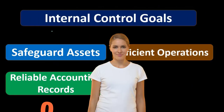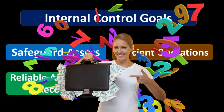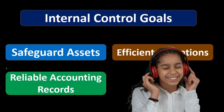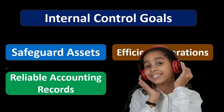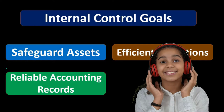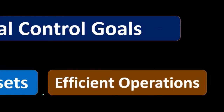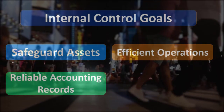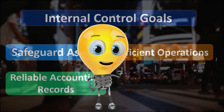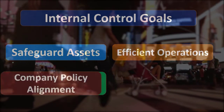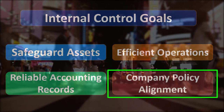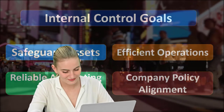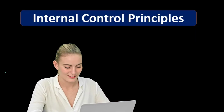Note that internal controls might actually slow up processes because they safeguard assets and ensure reliable records — we may be jumping through more hoops. However, we would lose safeguarding and reliability without them. The efficiency factor means some controls help us become more efficient, while other times, achieving goals like safeguarding assets and reliable records may extend processes. We also want company policy alignment — setting up controls so people are incentivized, supervised, and enforcing company policies.